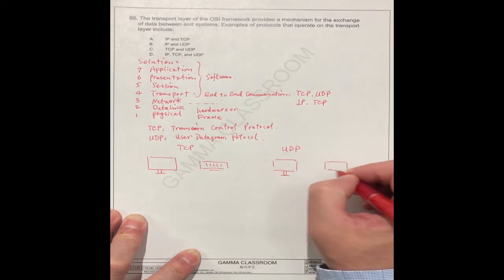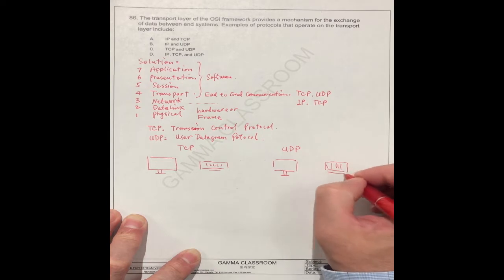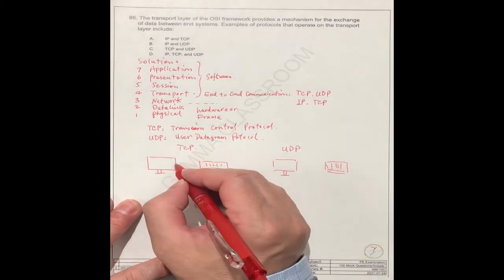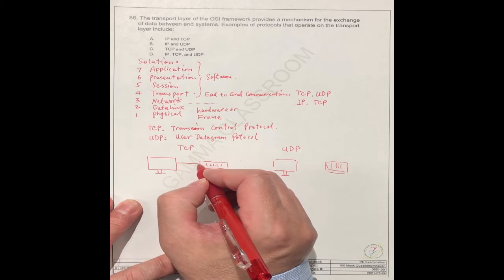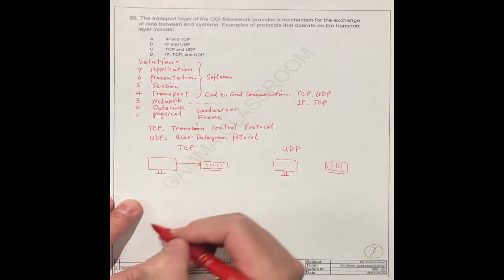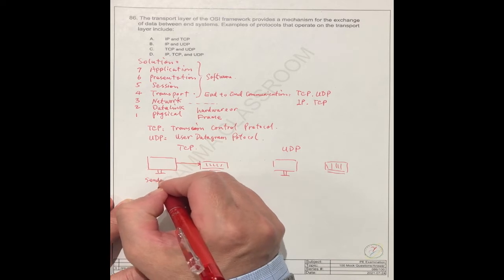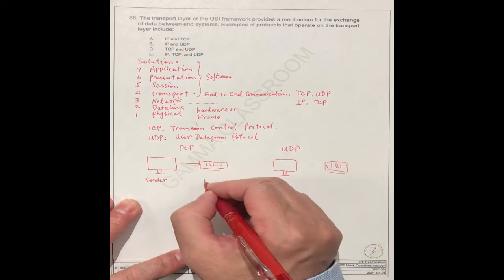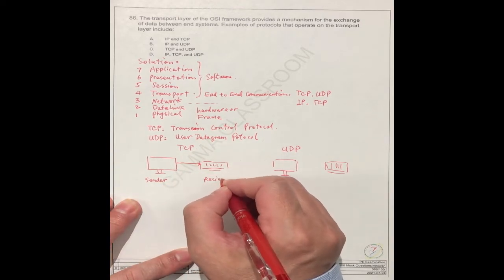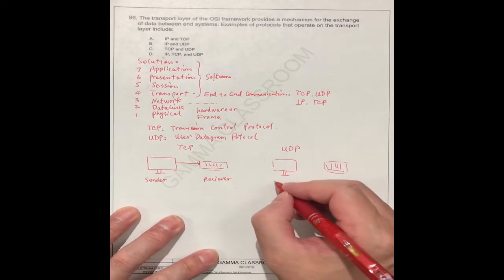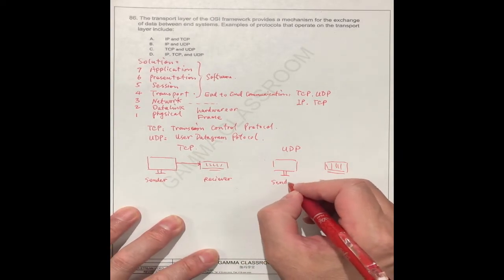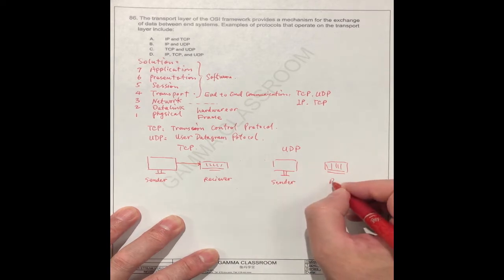You can call this the computer and this is the user. For TCP, we have to send the sync, synchronize. This is called the sender, this is called the receiver. The same, this is the sender, this is the receiver.